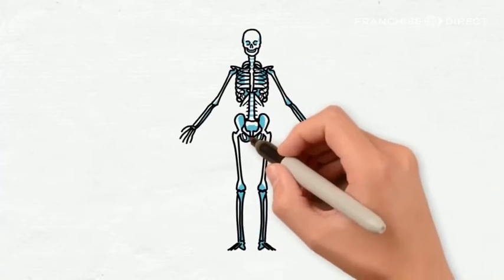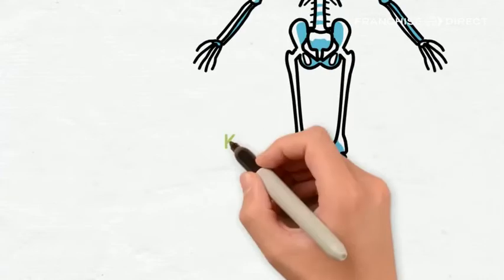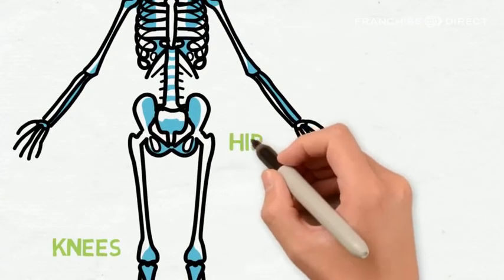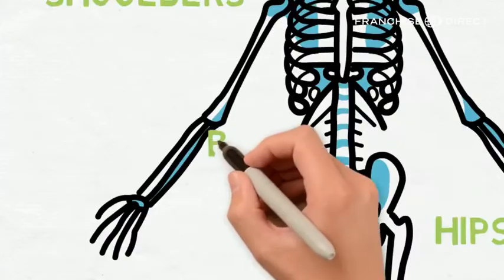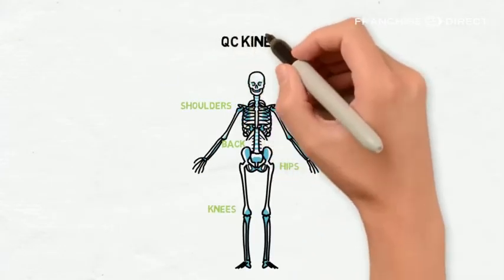It goes to work addressing the focal point of the pain, the root cause. Joint arthritis, aches and pains may be from an old injury in the knees, hips, shoulders, and back. Tissue damage has occurred and needs repairing.